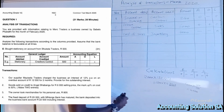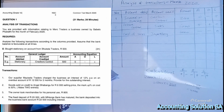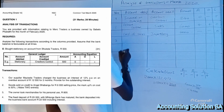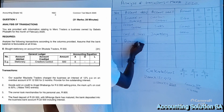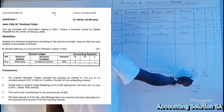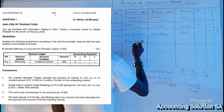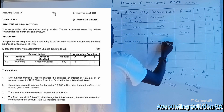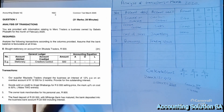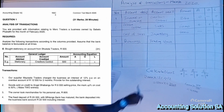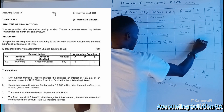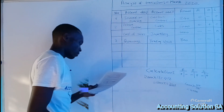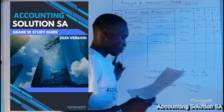Number three: the owner took merchandise for personal use valued at R800. Personal use is Drawings, and Drawings reduces Owner's Equity on the debit side. He took merchandise, which is trading inventory — trading inventory, trading stock, and inventory are the same. Since it was taken out, inventory is no longer in assets, so it is minus. Amount is R800.